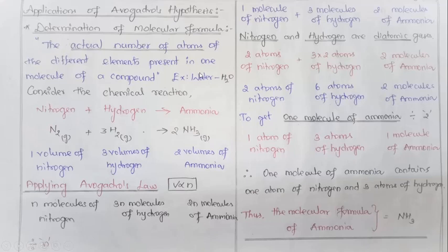Let us have an example — water. Everyone knows the formula is H2O. What are the elements present in it? Hydrogen and oxygen. How many atoms of hydrogen? Two. How many atoms of oxygen? One. So the actual number of atoms: two hydrogen, one oxygen. That is the chemical formula of water.